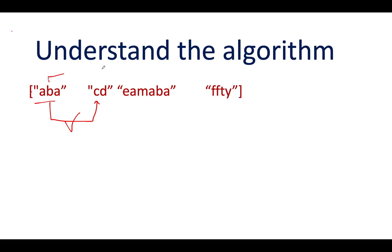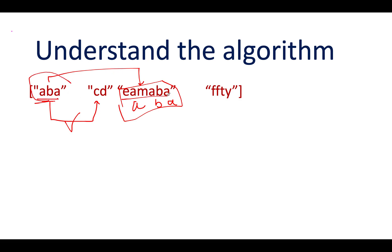Next we compare 'aba' versus 'eamaaba'. You can see that 'aba' is occurring in this string — it is a common subsequence of 'eamaaba', which has 'aba' as a possible subsequence. That means we can't move ahead with 'aba' because it is part of this larger string. Therefore, this is an abortion case.